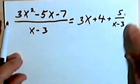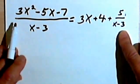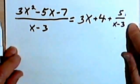The 5 was the remainder, and we used the divisor or the denominator as the denominator of the fraction at the end of this.